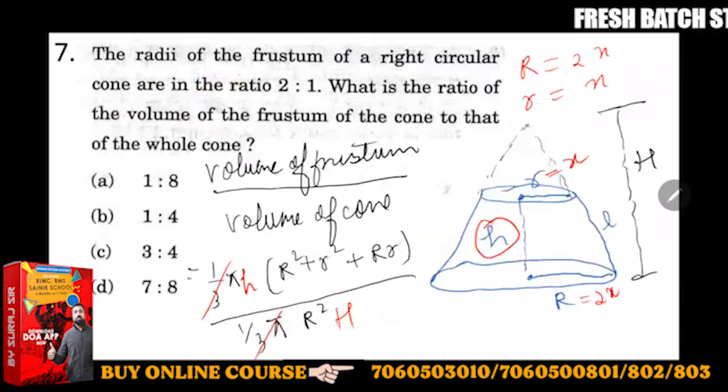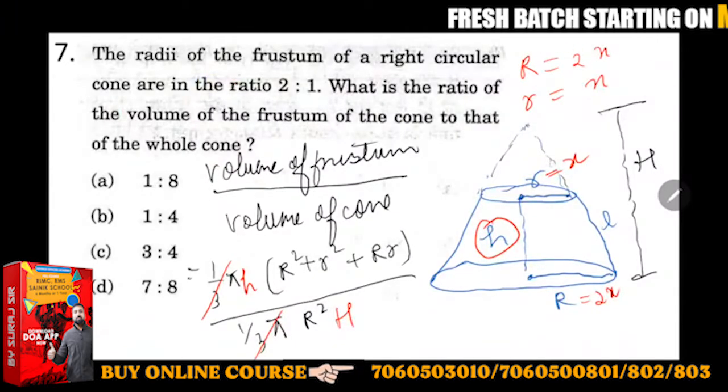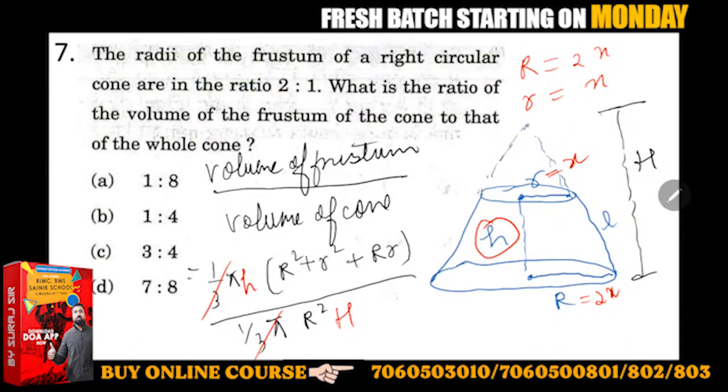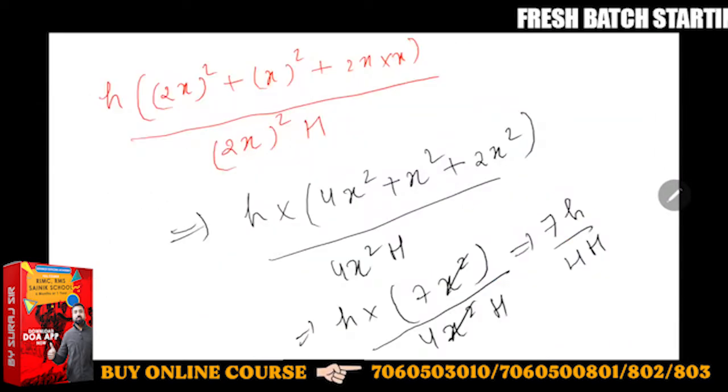The options given are 1:8, 1:4, 3:4, and 7:8. What will we do with this h?